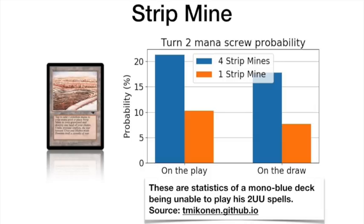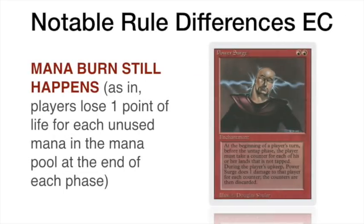That kind of thing happens more in Eternal Central than in Swedish old school. It does happen in Swedish too — we know how frustrating it can be playing against a good control deck where every meaningful card gets countered, disenchanted, or sworded. There's always this balance between letting people play Magic and trying to control the match. For me personally, four Strip Mines is a bit too much, but I'm sure you can build quite successful and enjoyable decks with four Strip Mines in the back of your mind.